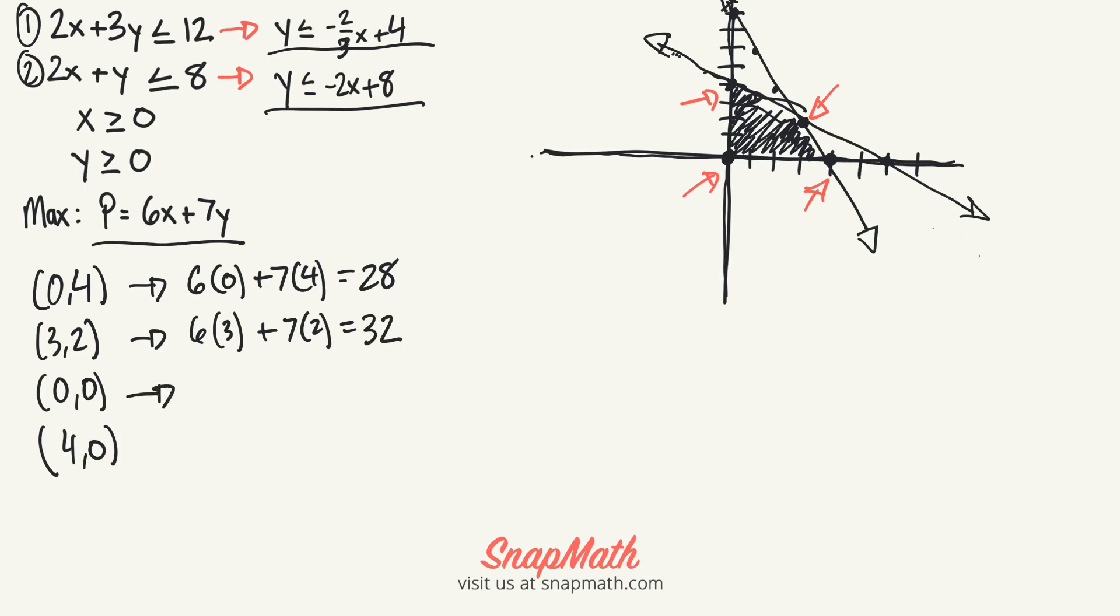The next one will be 6 times 0 plus 7 times 0, which is 0. The last one will be 6 times 4 plus 7 times 0, which equals 24. As you can see, (3,2) is going to be our maximum.